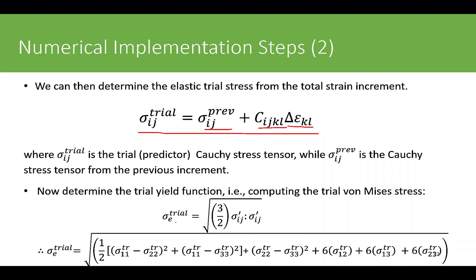We then determine the trial equivalent stress, which is also the trial von Mises stress, given by the standard relationship. When expanded in index notation, it can be written in terms of the individual stress components.